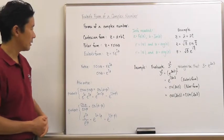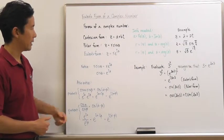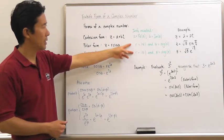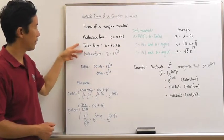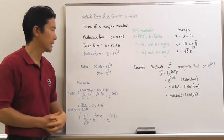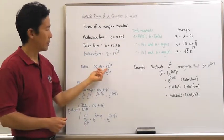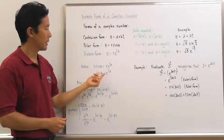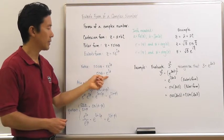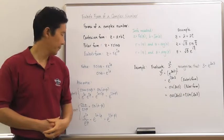Now, since the information needed for both the polar form and the Euler's form is exactly the same, we can equate those forms together and come up with cis theta. Cis theta is equal to e to the i theta.